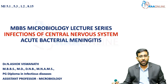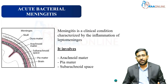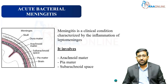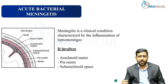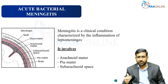Today we are studying acute bacterial meningitis. Before going into the topic, let us learn the definition. Meningitis is the inflammation of the leptomeninges. The leptomeninges comprise three layers: the arachnoid mater, the pia mater, and between them the subarachnoid space. These three together are called the leptomeninges. Any inflammation occurring in these structures is called leptomeningeal inflammation, which is meningitis.